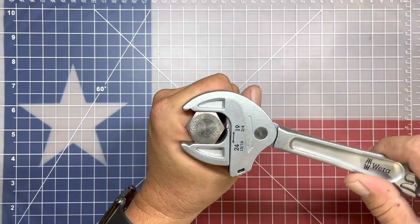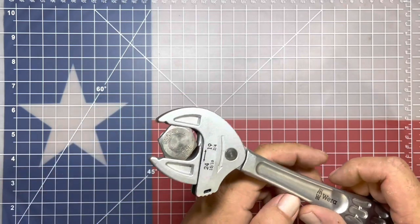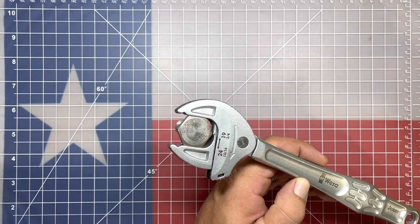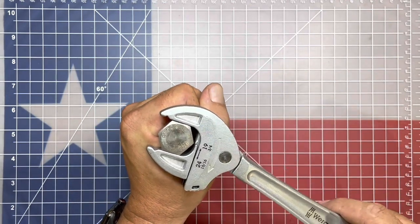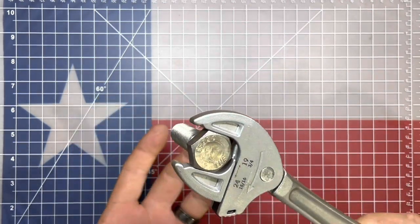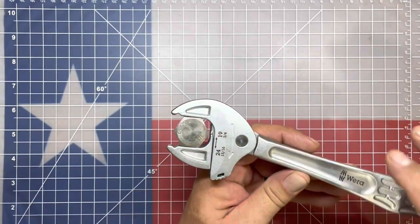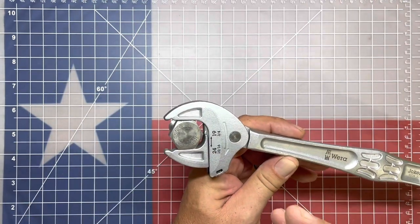And now when you go to torque on these, it gets even tighter and functions a lot like the Knipex pliers wrenches do in that respect where the tighter that you, the more pressure that you put on it, the tighter it grips the said fastener. So this is where these really, really shine.